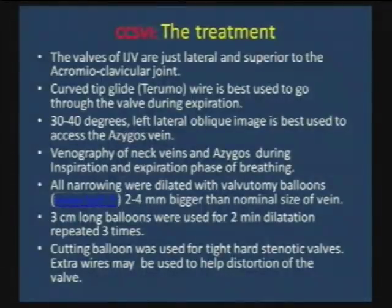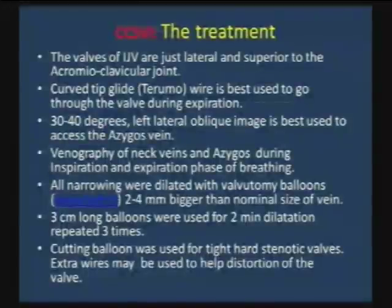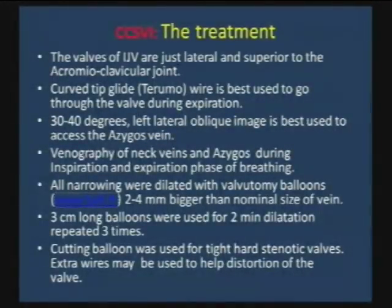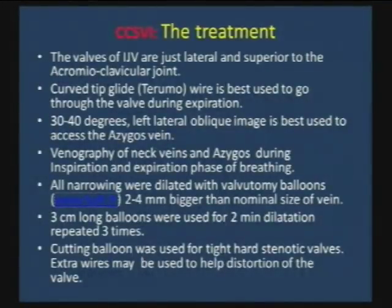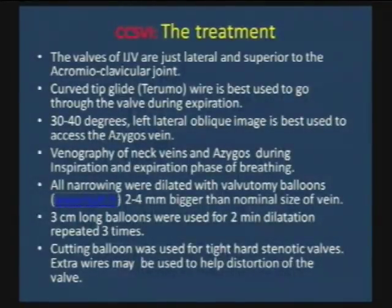The left lateral oblique image to access the azygos vein is at 30–40 degrees. You can use different degrees of 70 or lateral to image the whole azygos vein, but the easiest way to access the azygos vein is using a COBRA 2 catheter at 30–40 degrees. If you aim just to the left side of the patient, you can easily access the entrance of the azygos vein.